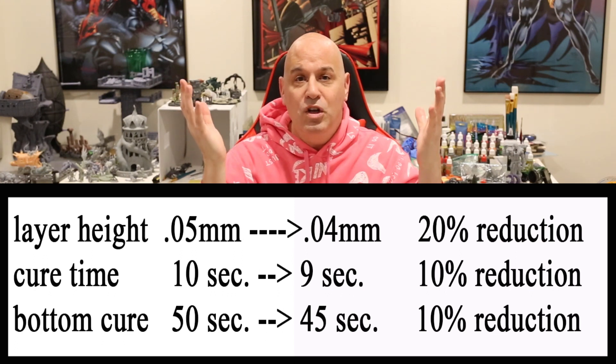Some people print at 0.03mm, so let's say you're at 0.04 and want to drop to 0.03. Going from 0.04 to 0.03 is a 25% reduction, so you drop your cure time by 12.5%. These numbers won't always be precise, so you can use a calculator or just round — and when rounding your cure times, round up to be safe. A little extra cure can't hurt.